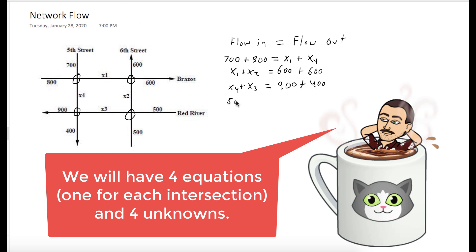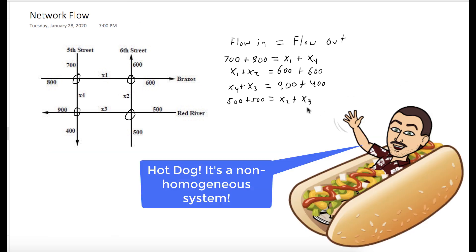And the last one, we have 500 plus 500 flowing in, and x2 plus x3 flowing out.